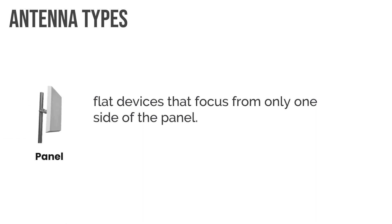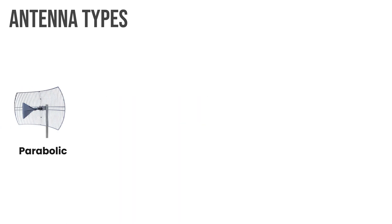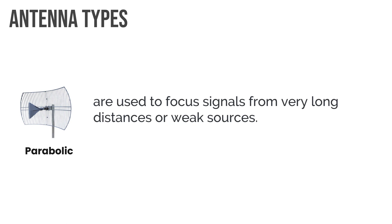A panel antenna is a flat device that focuses from only one side — you'll typically see these mounted against a wall because it provides support in one direction. A parabolic antenna is very directional, used to focus signals from very long distances or weak sources — you have to point it at the source you're trying to amplify. Think of satellite television: a satellite dish has to be pointed in the direction of the satellite for which it's receiving broadcast.